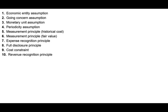We have a list of principles and assumptions, and based on this list we're going to select answers for certain scenarios indicating which principle or assumption applies. Let's take a look at the first one: fair value changes are not recognized in the accounting record. So they're telling you fair value changes are not recognized, although sometimes fair value changes are recognized. But when fair value changes are not recognized, what does that mean?